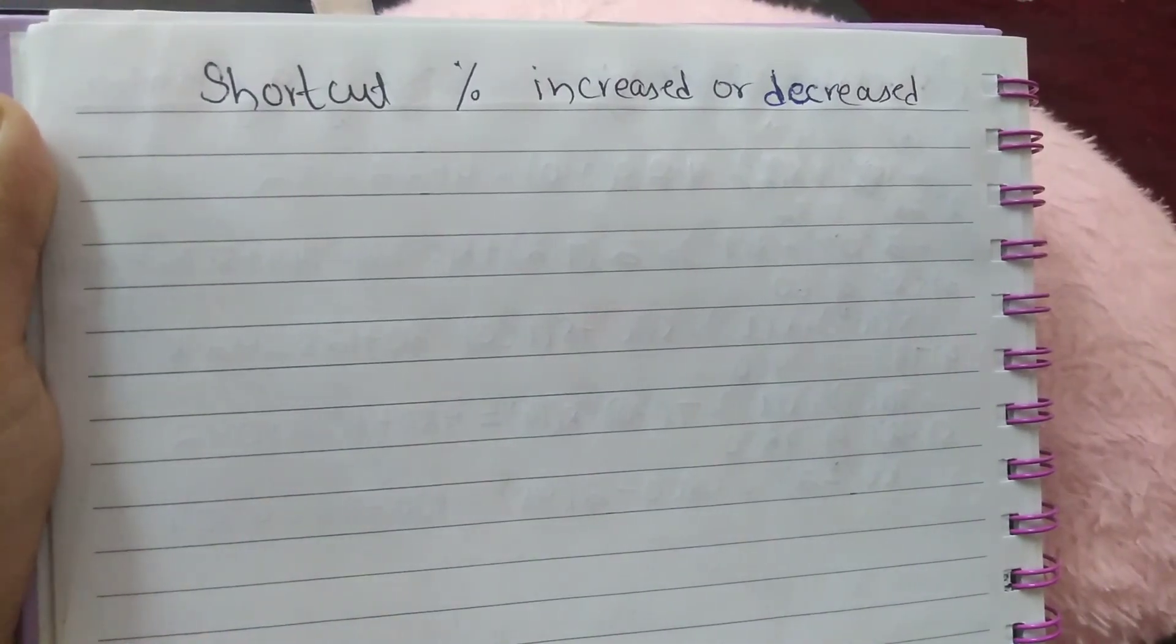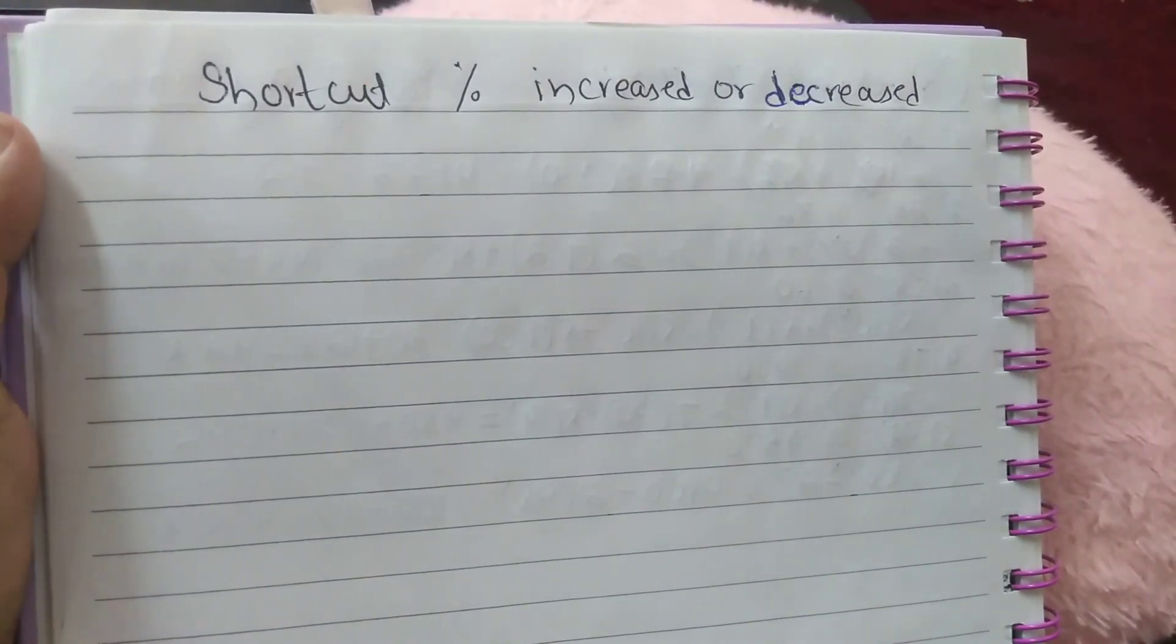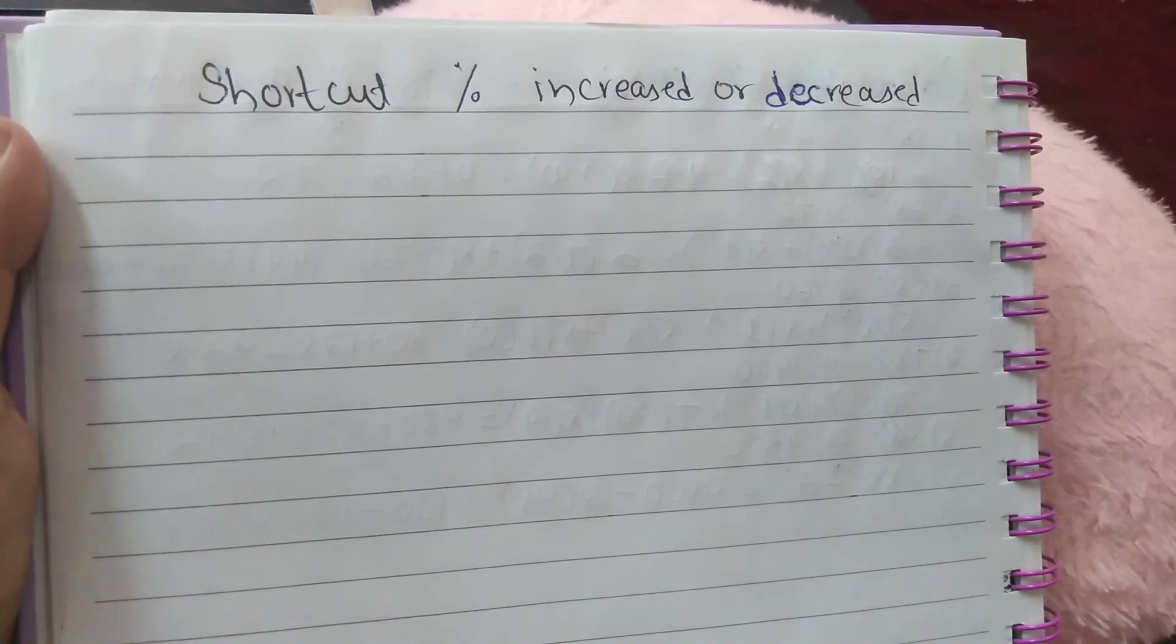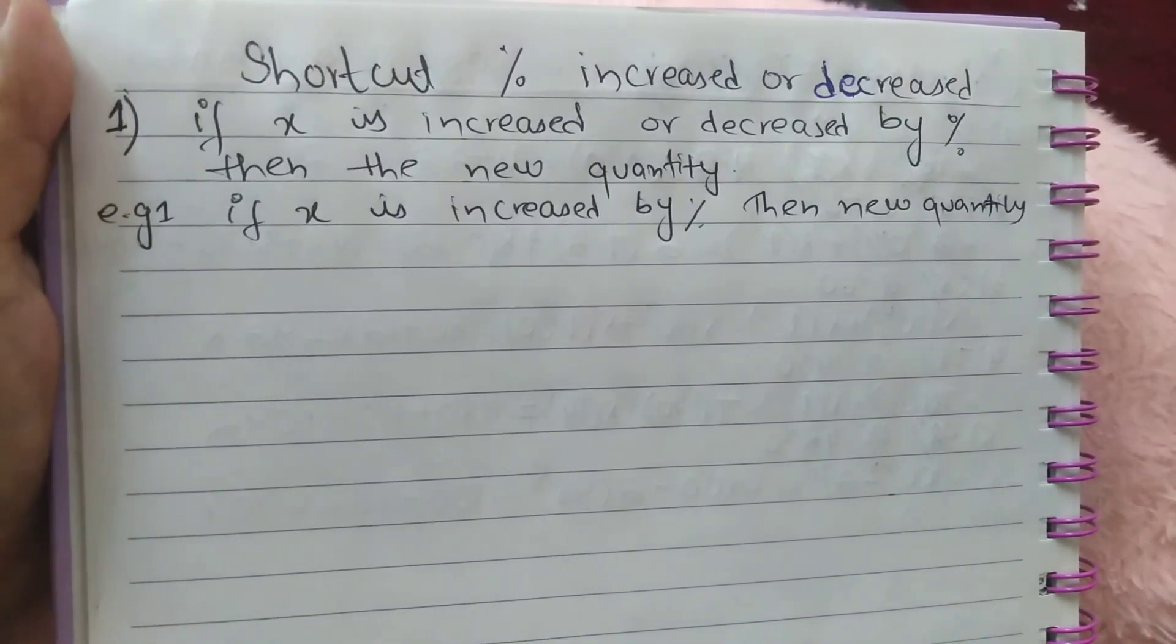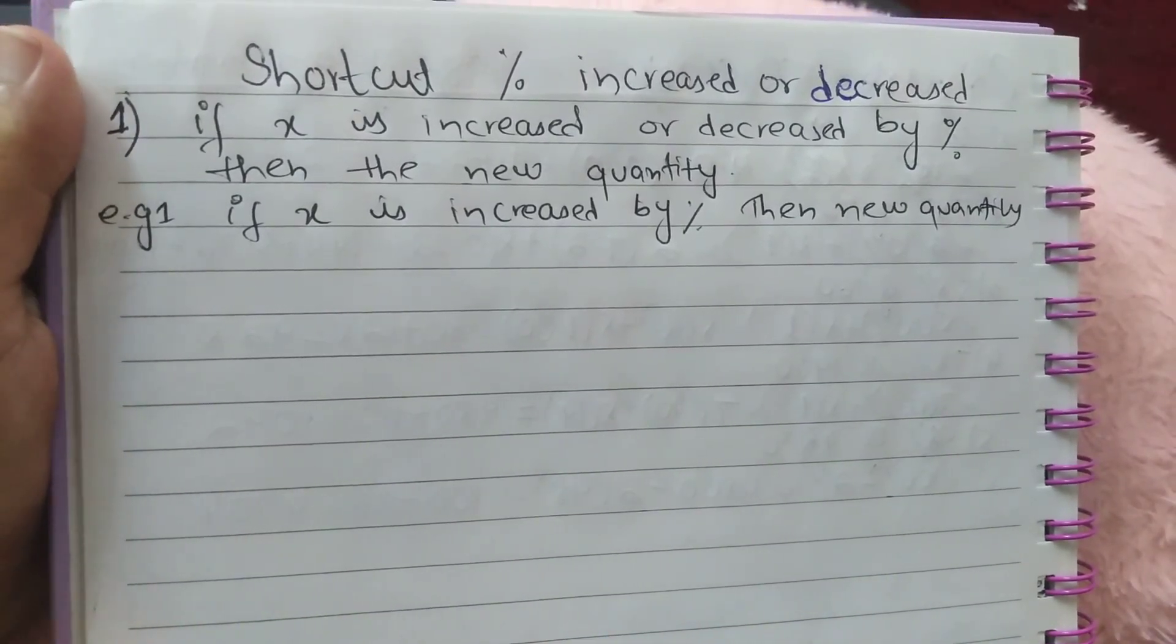Assalamu alaykum viewers, welcome to my channel NDS Guru. In this lecture, you will learn two shortcut methods which are involved in percentage increase or decrease questions. The first shortcut is for the type of question which are given as if X is increased or decreased by percentage, then the new quantity is.